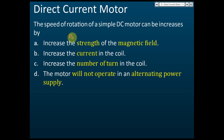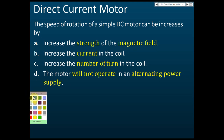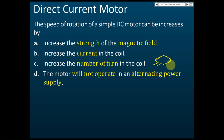Another thing that may be asked in your test or exam: what are the factors that affect the speed of rotation — how to make the motor rotate faster? First, increase the strength of the magnetic field by using a stronger magnet. Second, increase the current — use a higher current. Third, increase the number of turns in the coil. The coil can have many turns: one, two, three, four, and so on.